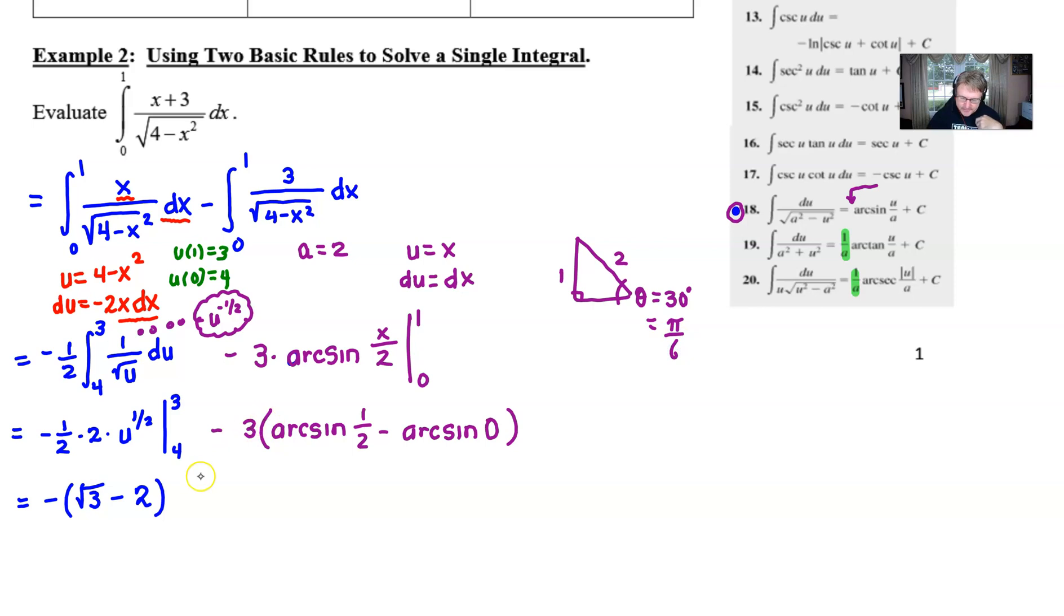So we know that this is going to be minus 3 times π over 6 of course minus 0 and then one final step maybe I'll distribute the negative just to clean this up just a tad and I can certainly multiply or divide my 3 over 6 and get minus π over 2 and that's pretty much as clean as we can get this.